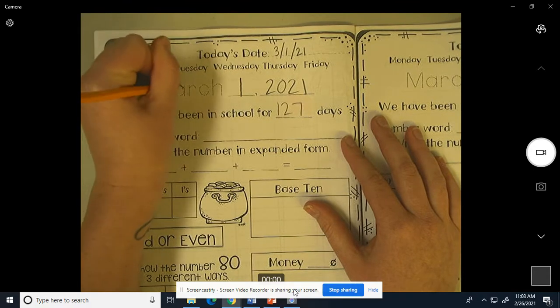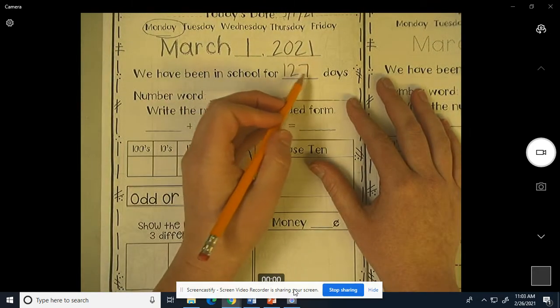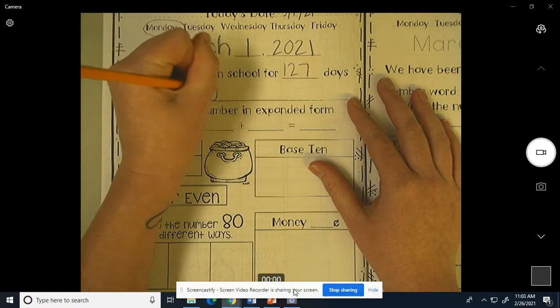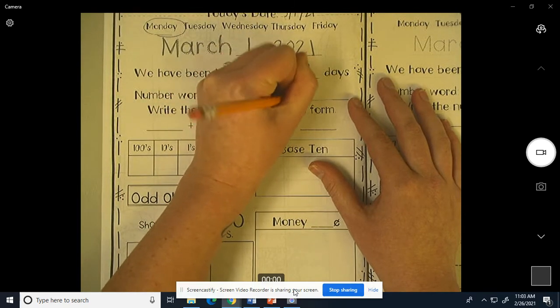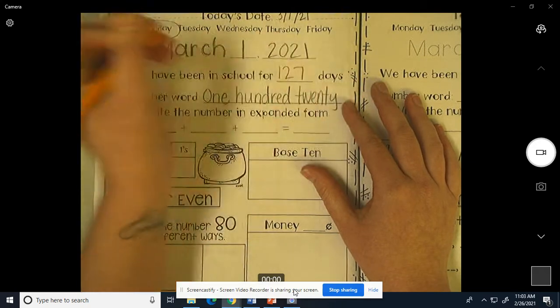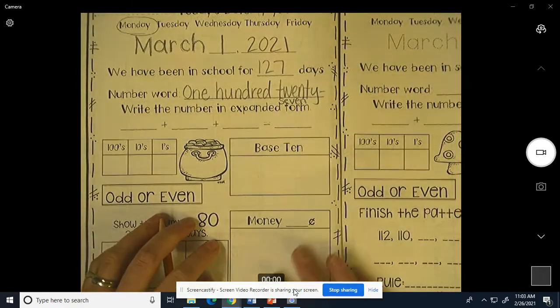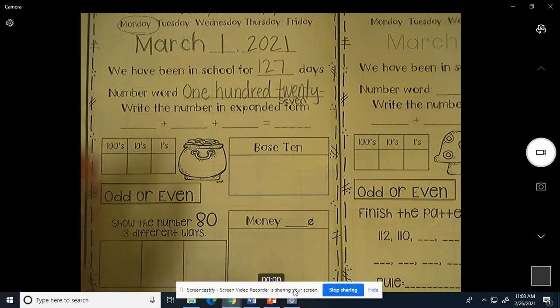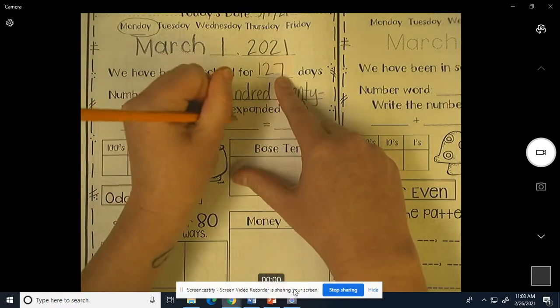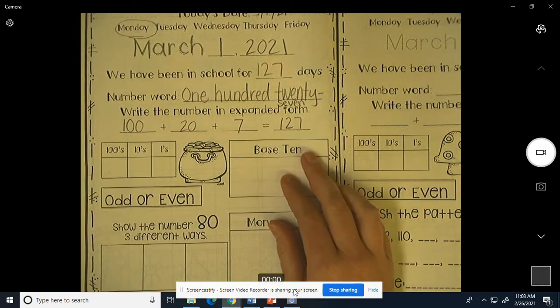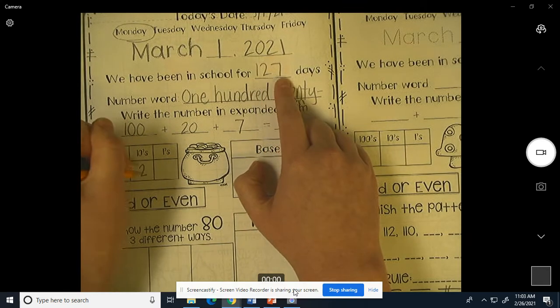We are going to outline March. We've been in school for 127 days. The number word for 127 is one hundred twenty-seven. 100 plus 20 plus 7 is 127. How many hundreds do we have? 1. How many tens do we have? 2. How many ones do we have? 7.